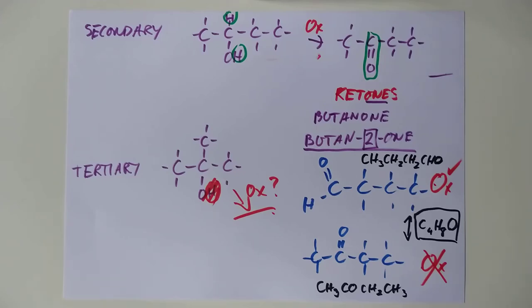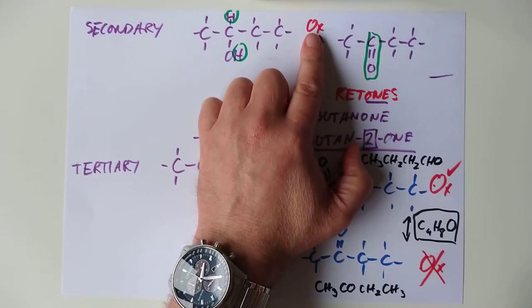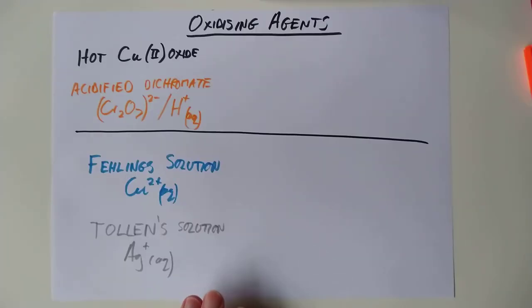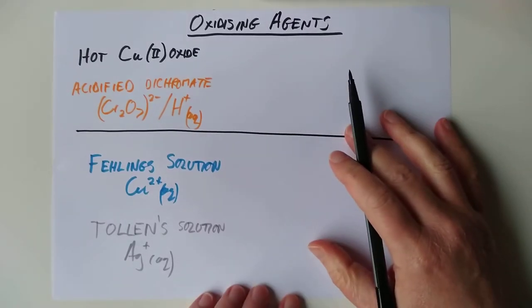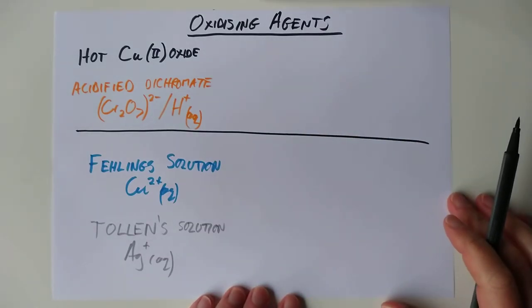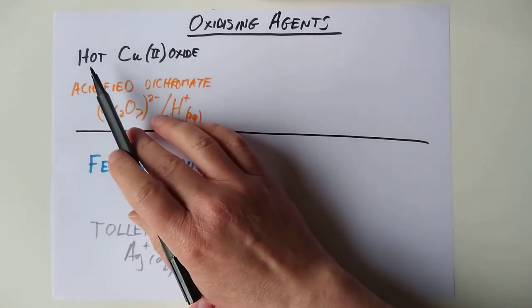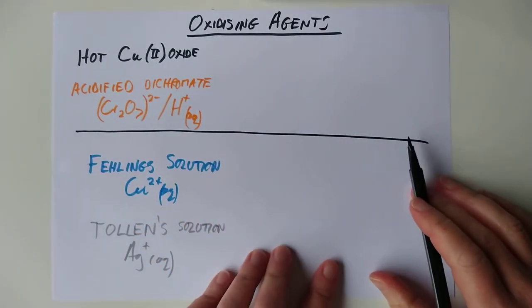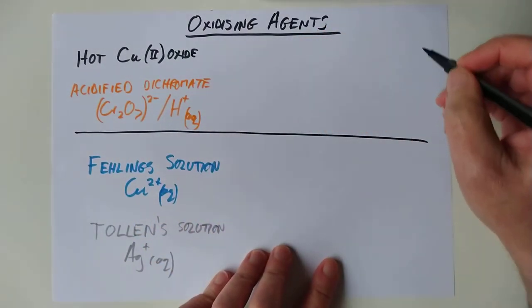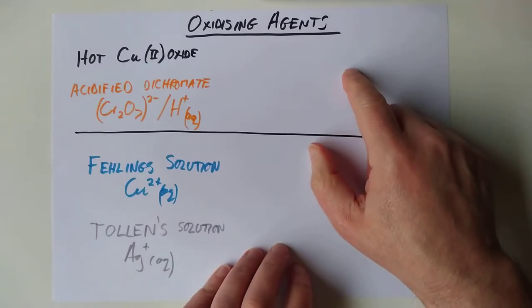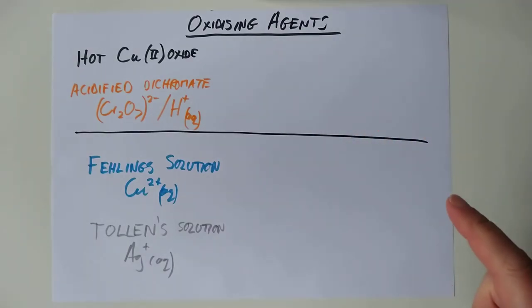I'll form the last chapter of the video, which are the chemicals you can actually use to make this oxidation reaction happen. The SQA want you to know about four oxidizing agents at a higher level. They want you to know about these two which are used to turn alcohols into aldehydes if you can, and then into carboxylic acids.